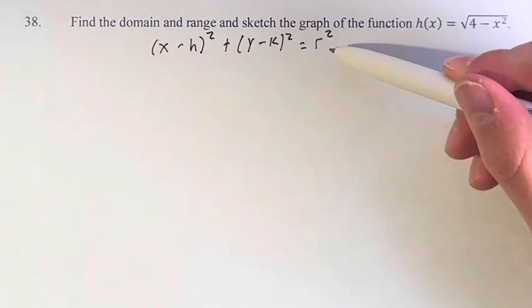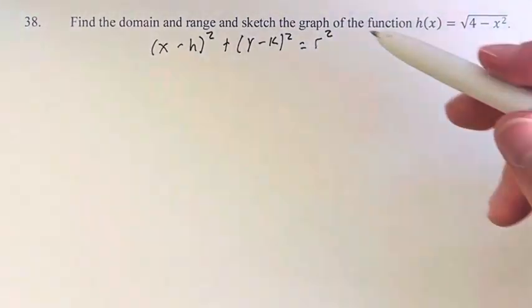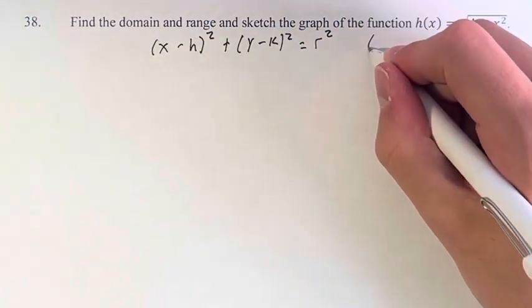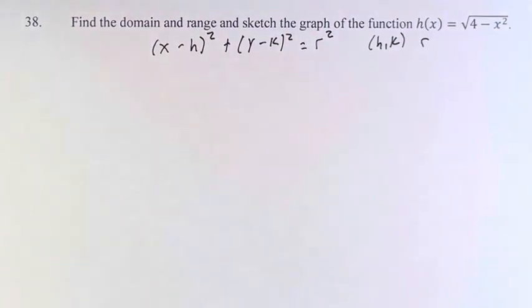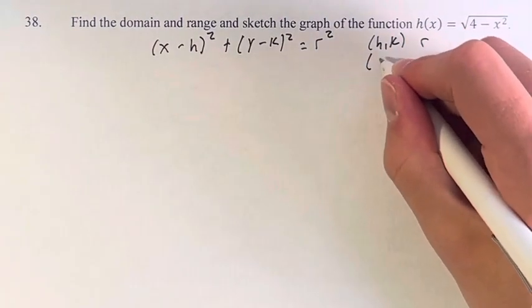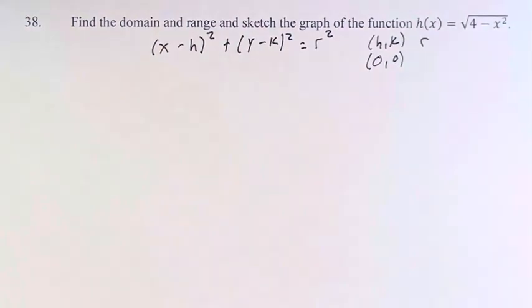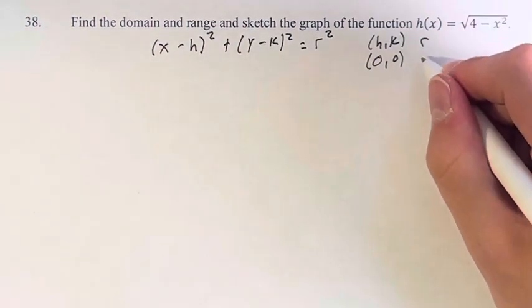This is the equation for a circle with center (h,k) and radius r. What we're going to do is set the center of the circle to (0,0) and the radius of the circle to 2.